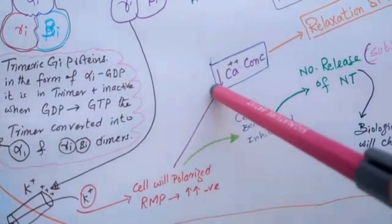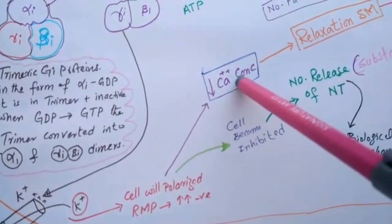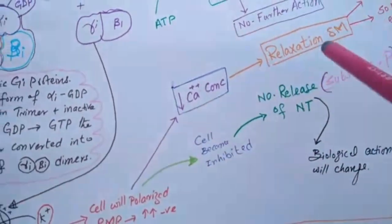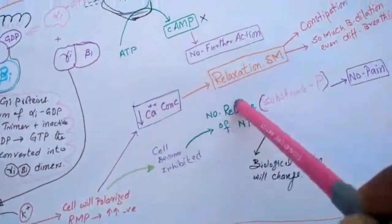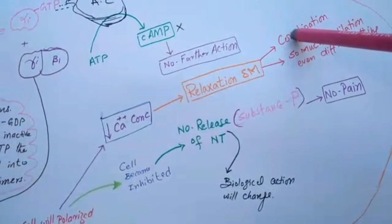Even sometimes there is decreased calcium level, and this decreased calcium level will cause the relaxation of smooth muscles. So morphine causes constipation. So the mechanism is...